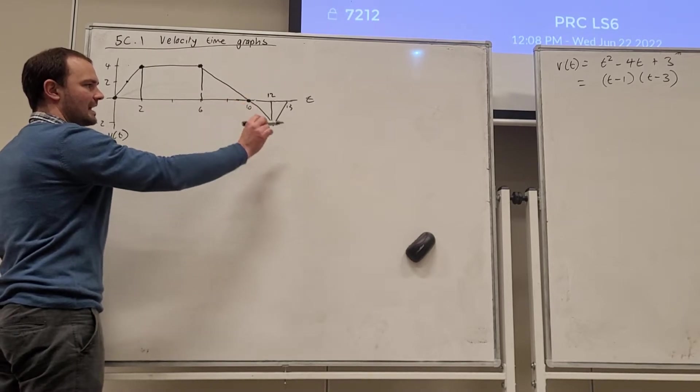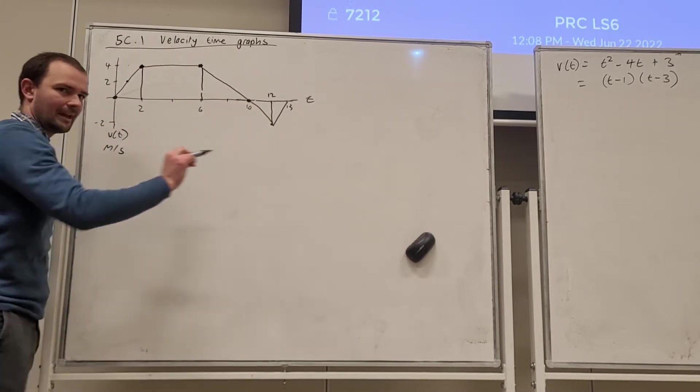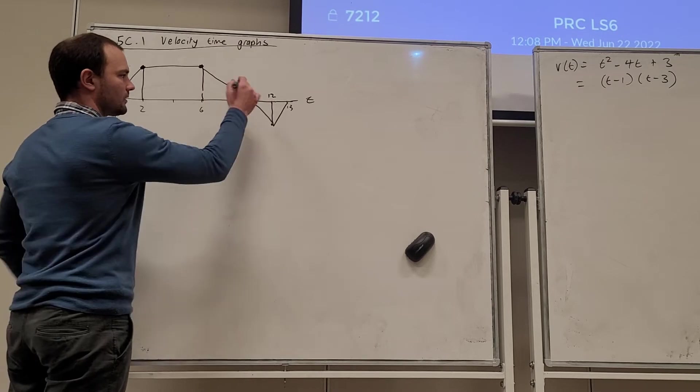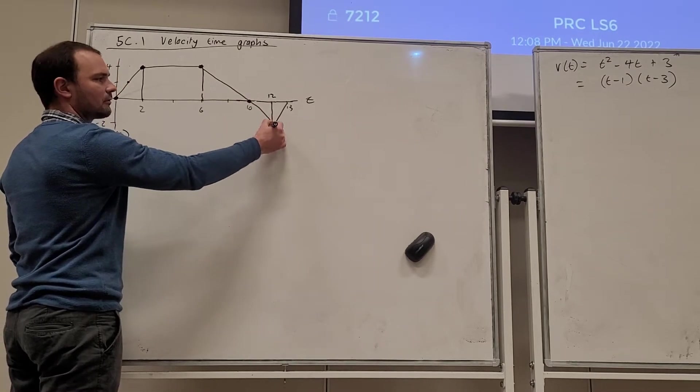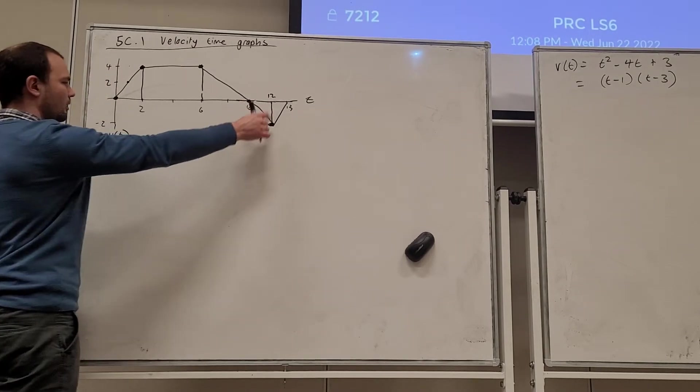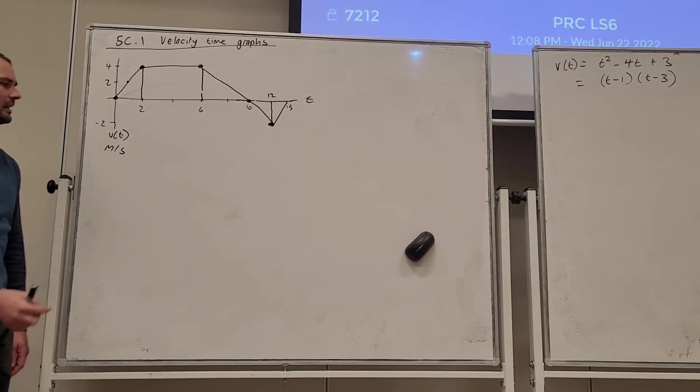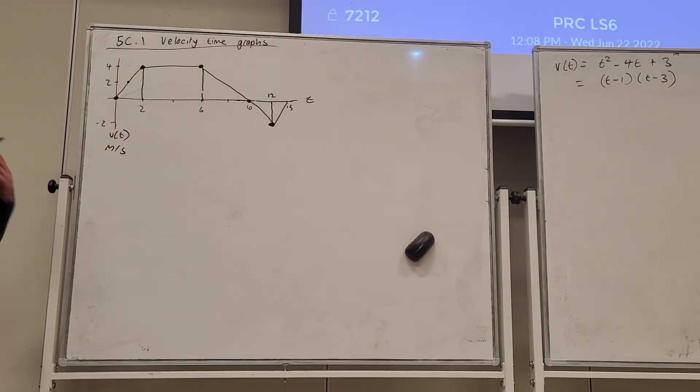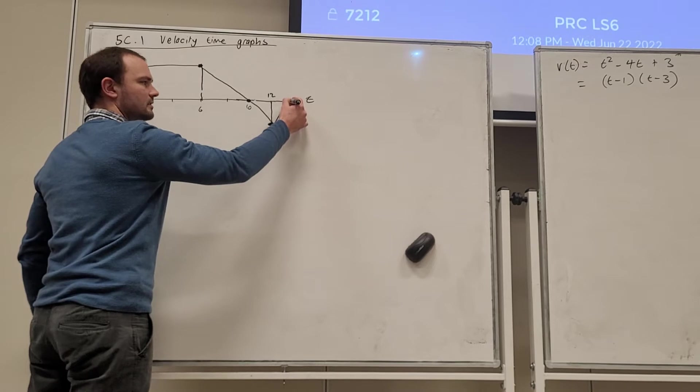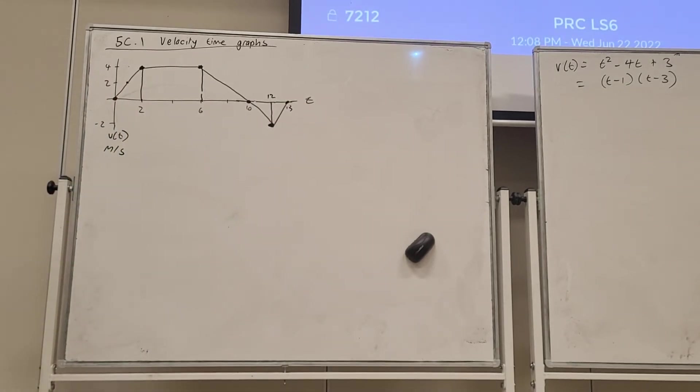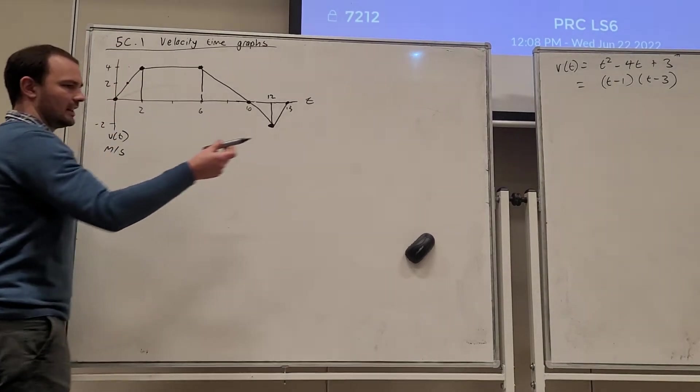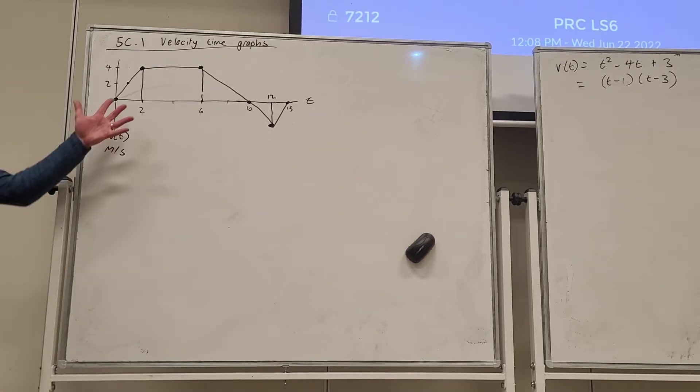And then after time is ten it has negative velocity, which means it's moving to the left. So we have something moving to the right and then it starts moving back to the left. So it moves to the left and it's accelerating the rate at which it moves to the left until we get to this point in time here, which is twelve. And at that point in time it's moving at two metres per second to the left. And then it decides to slow down the rate at which it's moving to the left until it stops. It has a velocity of zero after thirteen seconds. So that's the description of what's happening to this object. It's moving to the right and then it's moving to the left and then it stops.